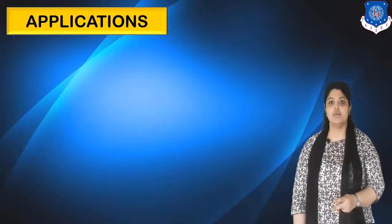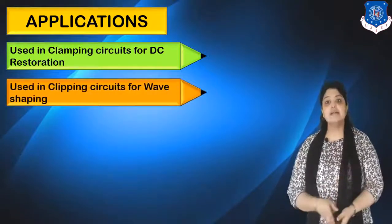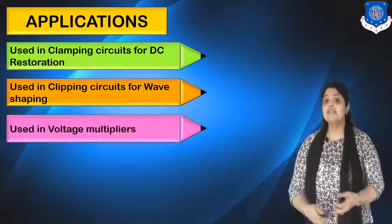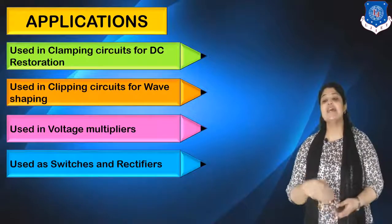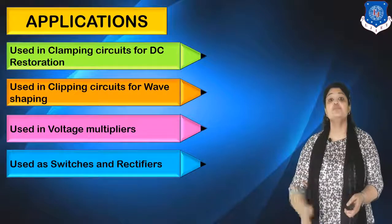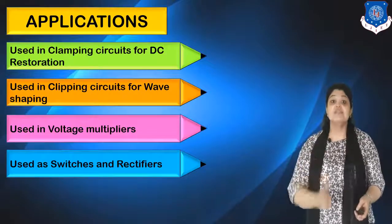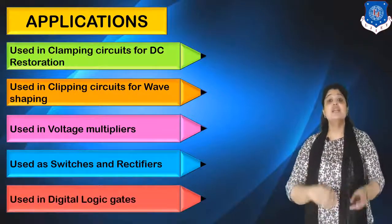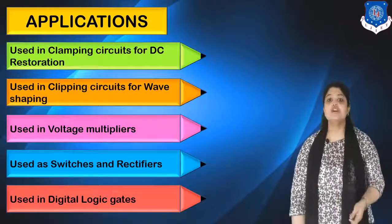Now let us discuss the applications of PN junction diode. It is used in clamping circuits for restoring DC components, in clipping circuits for wave shaping to clip a certain part of a wave, and in voltage multipliers to multiply the value of voltage. It is also used as switches and rectifiers — the basic function is to provide switching action since it gives current only in forward bias. Lastly, it is used in digital logic gates, which can also be designed using a PN junction diode.